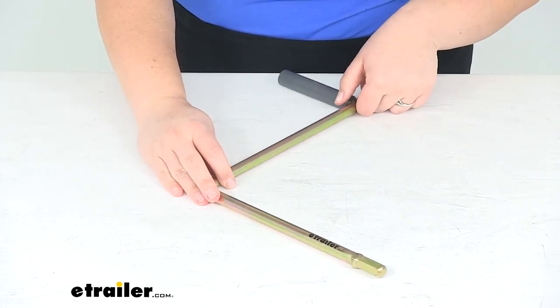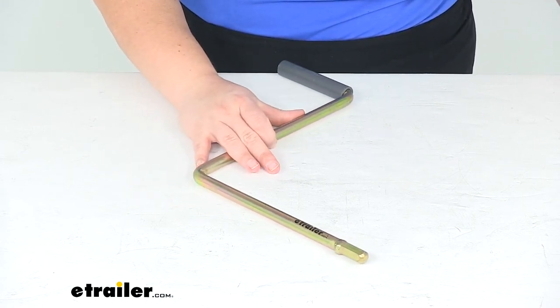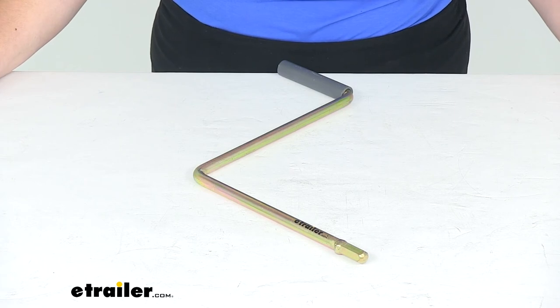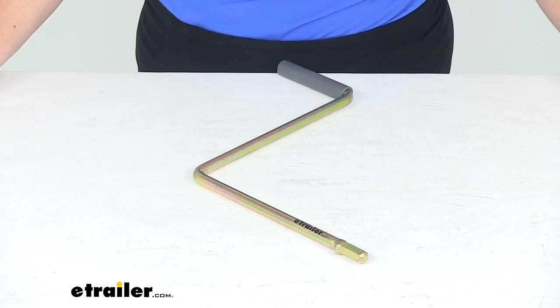Now if you need any other replacement parts for your camper jack system or anything else for your RV or camper, you can always check eTrailer.com for any accessories. Thanks for watching and that's going to do it for our look at the replacement crank for the Happy Jack Manual Truck Camper Jack System.